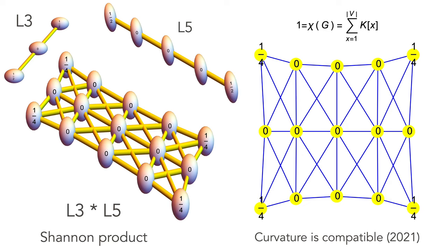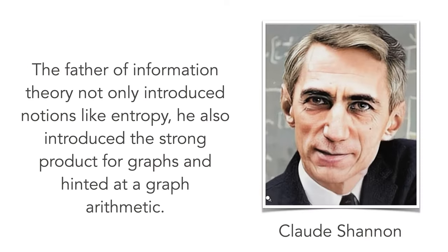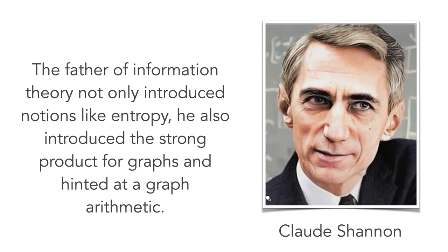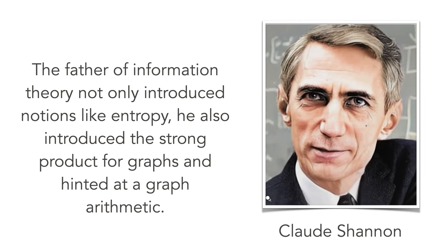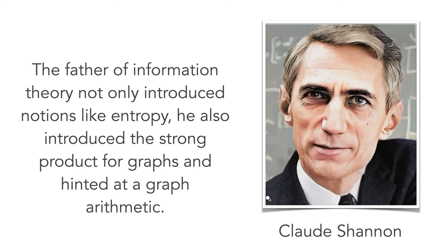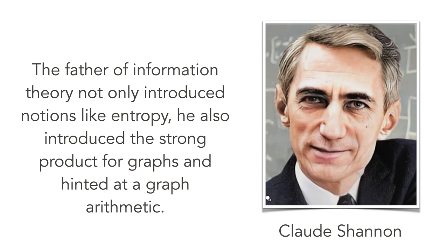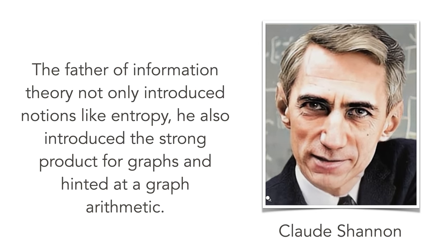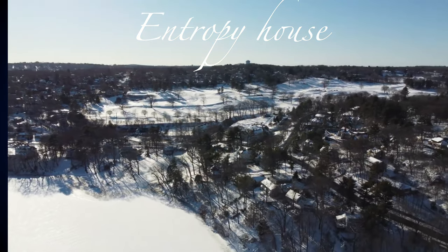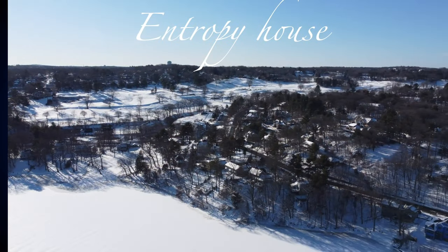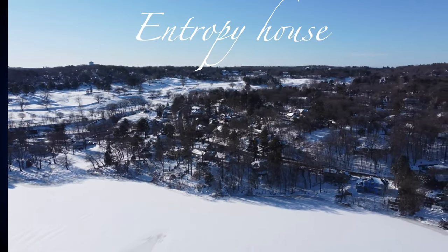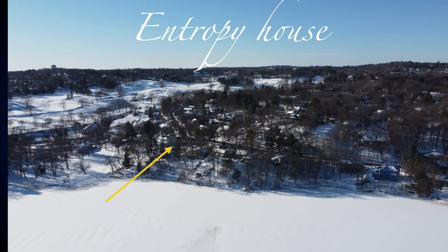This is an interesting case where we have a product graph, the Shannon product of two graphs, and then the curvature is multiplied. I proved that last year. By the way, Shannon not only produced entropy, but also produced a product for graphs which is very natural and started to hint at an arithmetic of graphs. Recently I was flying over the house, the entropy house. That was the house where Shannon lived in Winchester.